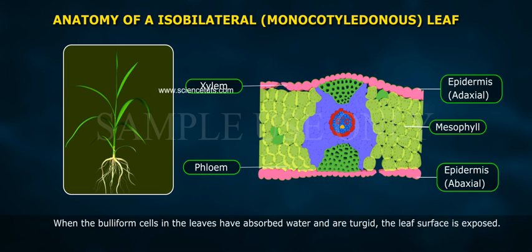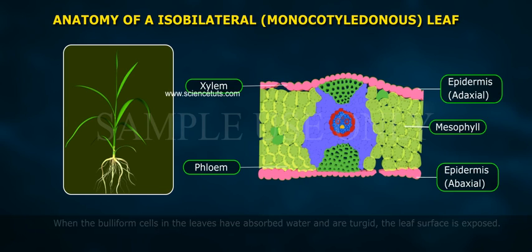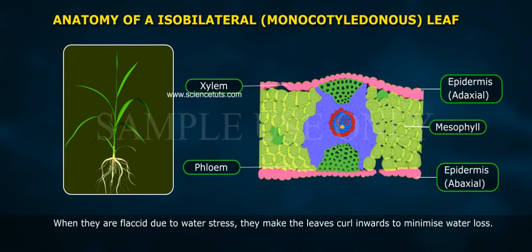When the bulliform cells in the leaves have absorbed water and are turgid, the leaf surface is exposed. When they are flaccid due to water stress, they cause the leaves to curl inwards to minimize water loss.